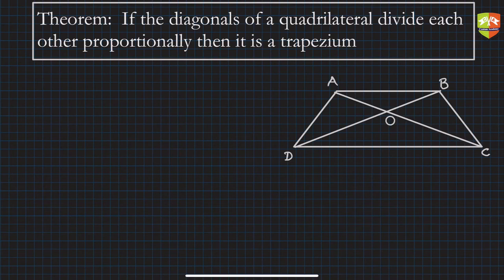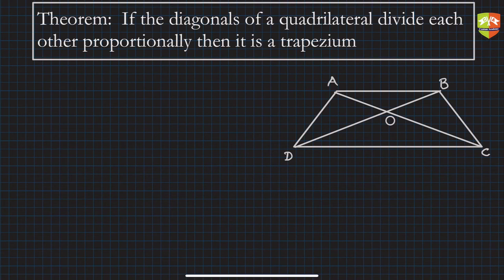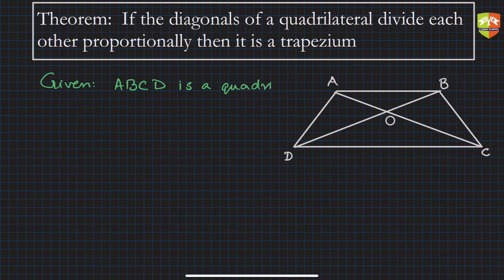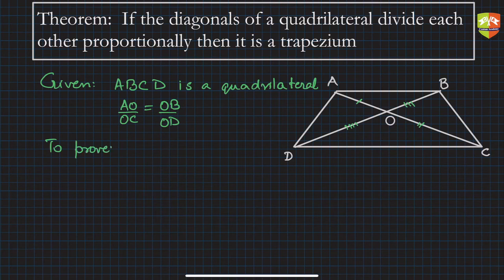They are intersecting at O. Now let's set up the proof. Given: ABCD is a quadrilateral — I am not assuming it to be a trapezium. What is given is that AO/OC = OB/OD. We have to prove that ABCD is a trapezium.